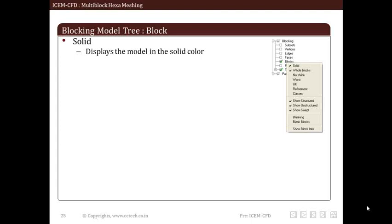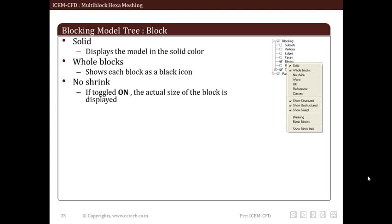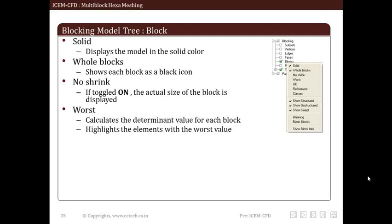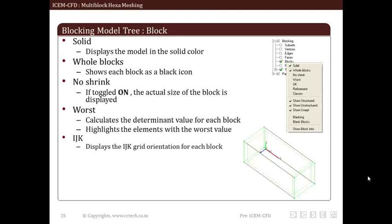Solid makes model visible in solid color. Whole blocks displays each block in black icon. No shrink shows actual size of the block. Worst highlights element with worst value by calculating determinant value for each block. IJK displays the IJK orientation for each block. Blanking unblanks previously blanked blocks. Blank blocks blank selected blocks.